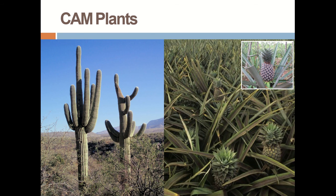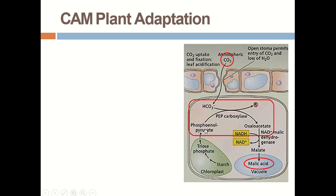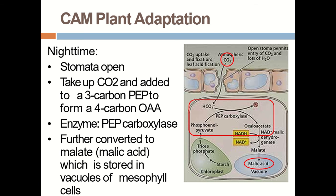The next adaptation is the CAM plant — Crassulacean Acid Metabolism — seen in succulent plants, mostly cacti and pineapples. In these plants at night time, stomata open, allowing the entry of CO2, which is added to PEP carboxylase to form the 4-carbon oxaloacetate. This is further converted to malate and then stored in the vacuole of the mesophyll cell.